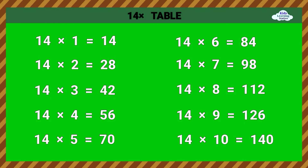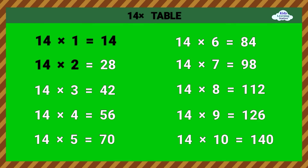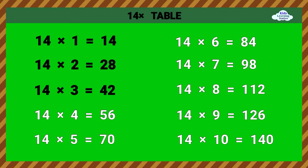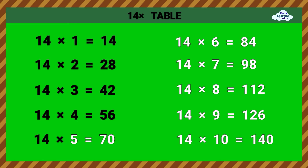14 times table. 14 times 1 equals 14. 14 times 2 equals 28. 14 times 3 equals 42. 14 times 4 equals 56. 14 times 5 equals 70.